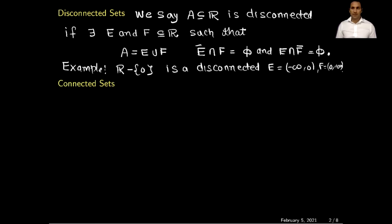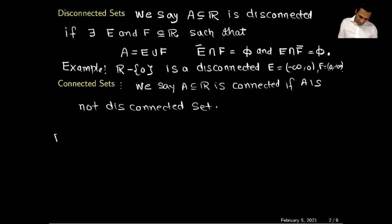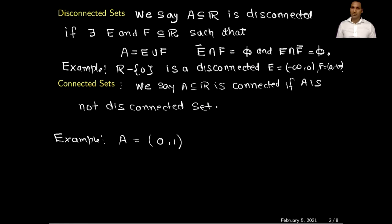Now we define what a connected set is. A connected set is the negation of a disconnected set — we say a subset of the reals is connected if it is not disconnected. An example of a connected set is an interval, because you cannot write an interval as a union of two disjoint sets.